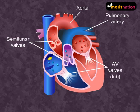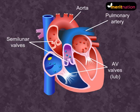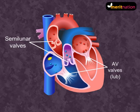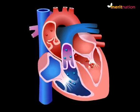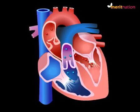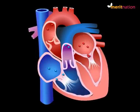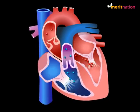During ventricular diastole, the ventricles relax. Arterial pressure falls and blood begins to flow back into the ventricles. This reversal of pressure causes the semilunar valves to shut, producing the second heart sound, 'dub.' So now you know what produces the sound lub-dub. Meanwhile, the atria have been filling with blood, and as the ventricles relax, blood flows from the atria into the ventricles, forcing the AV valves to open again.